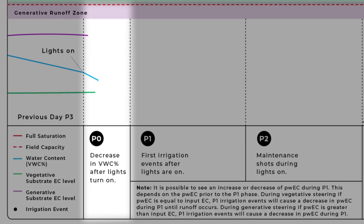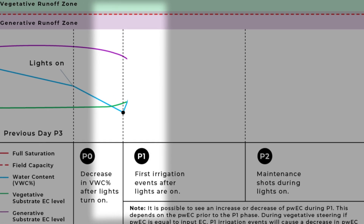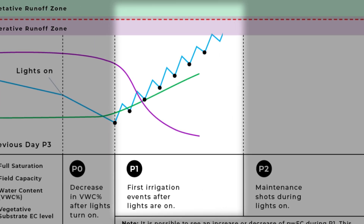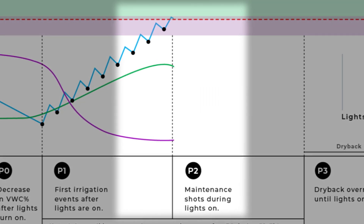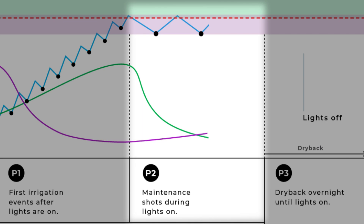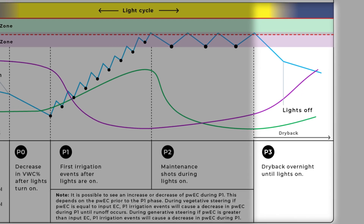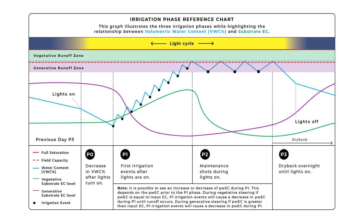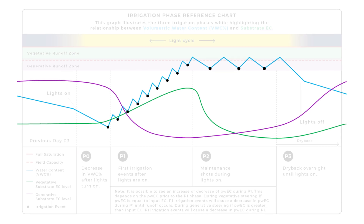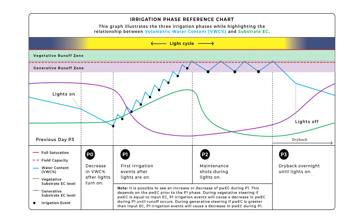P0 is additional dry back once lights are on, or transpiration before irrigation. P1 signifies the first irrigation events after lights are on until our target BWC percent is reached. P2 represents our maintenance shots during the lights-on period where we maintain our target BWC percent throughout the day. P3 is our dry back period from the last irrigation event of the day to the P0 phase of the following day. The main point to understand on this graph is the relationship between BWC percent and substrate EC — the fundamental principle we use in precision irrigation to crop steer or guide our plants to a desired outcome. Once you understand how to manipulate your substrate EC utilizing strategic irrigation events that affect BWC percent, you can create a dialed-in irrigation strategy for any strain to reach its full potential.